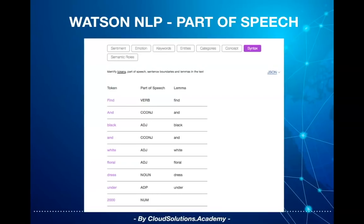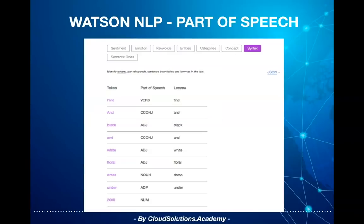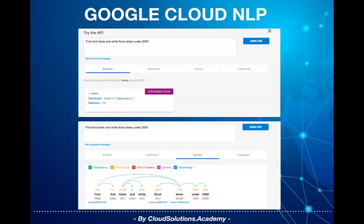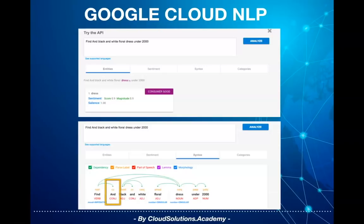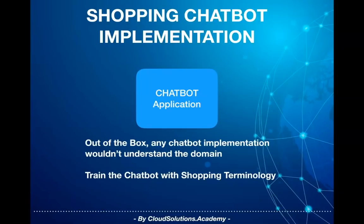The Watson NLP parser doesn't recognize And as a brand and recognizes 'and' as a conjunction in the part of speech, which is expected as it is not trained on it. Looking at how Google NLP classifies the same sentence: Google NLP identifies the entity as 'dress' but doesn't identify the colors black and white. With respect to part-of-speech tagging, it is similar to Watson NLP — recognizing 'and' as a conjunction and not as a brand. Even if we train the NLP implementation on all these examples, it will still fall short as you need to plug in specific NLP rules for such conditions to get the desired results.